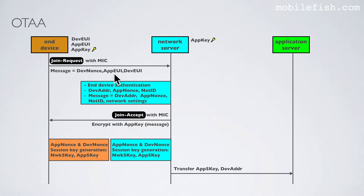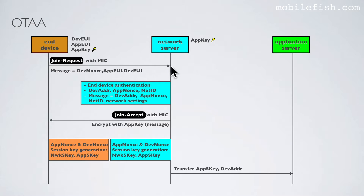DevNonce, AppEUI, and DevEUI are not encrypted by the AppKey. The ANT device can now activate itself by sending a join request message to the network server, containing the DevNonce, AppEUI, and message integrity code. After the network server receives the join request message, it will check if the DevNonce has not been used previously.